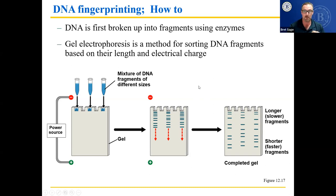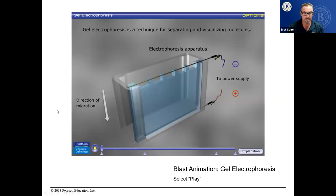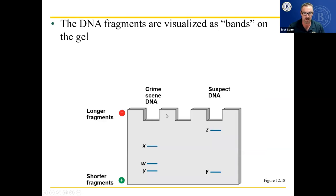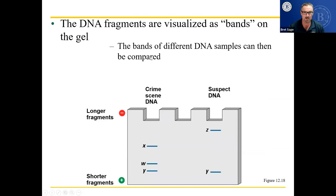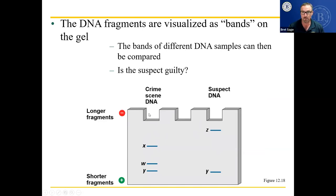DNA fragments are visualized as bands on the gel. The smaller bands move to the bottom because they move more quickly and the larger bands stay up at the top — like dumping dirt in a river where big chunks stay near where you dumped them and silt travels further downstream. You can see suspect DNA versus crime scene DNA. If the bands don't match, that doesn't mean the suspect is innocent or guilty — it just means it doesn't match. DNA samples can then be compared. Even if DNA at the crime scene doesn't match the suspect, that doesn't mean the suspect is innocent; that sample could have been from another person who was there.